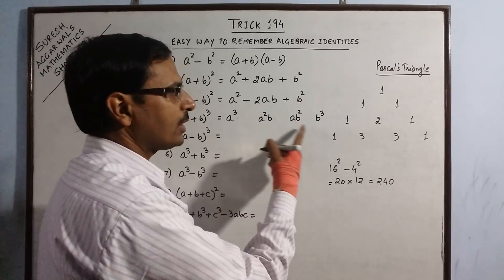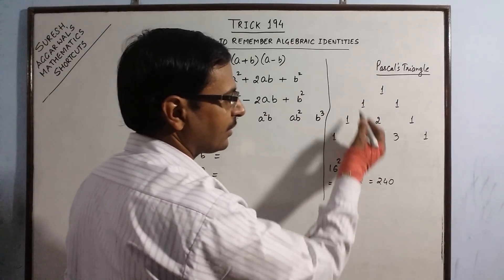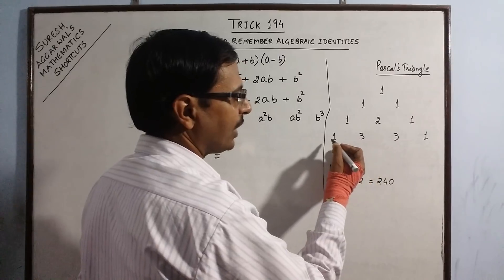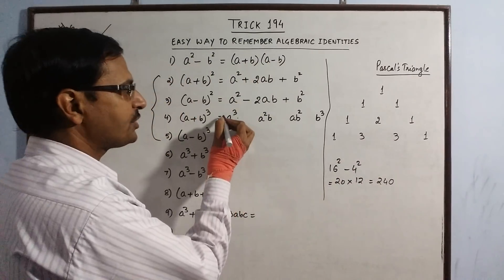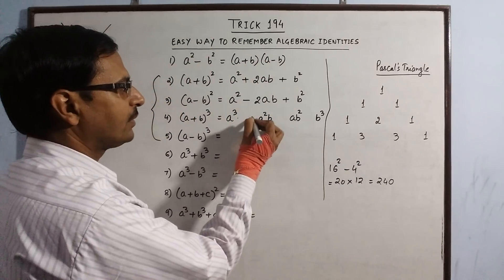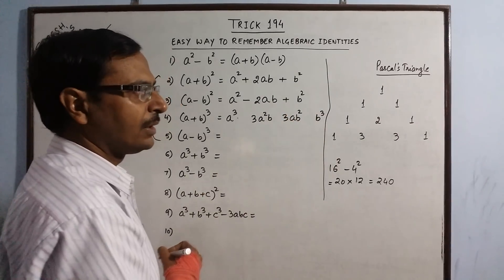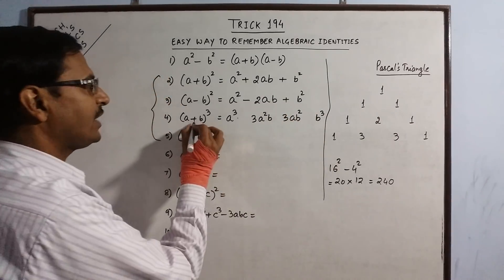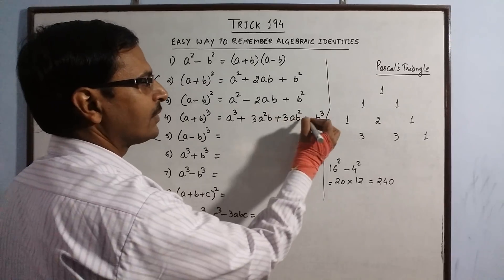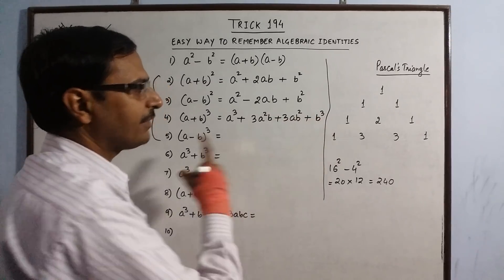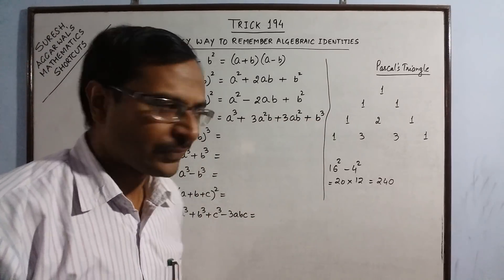There are 4 terms, so from Pascal's triangle we have 4 terms with coefficients 1, 3, 3, 1. We put these coefficients, and since we have positive signs all terms will be positive. So we get the identity of A plus B whole cube.